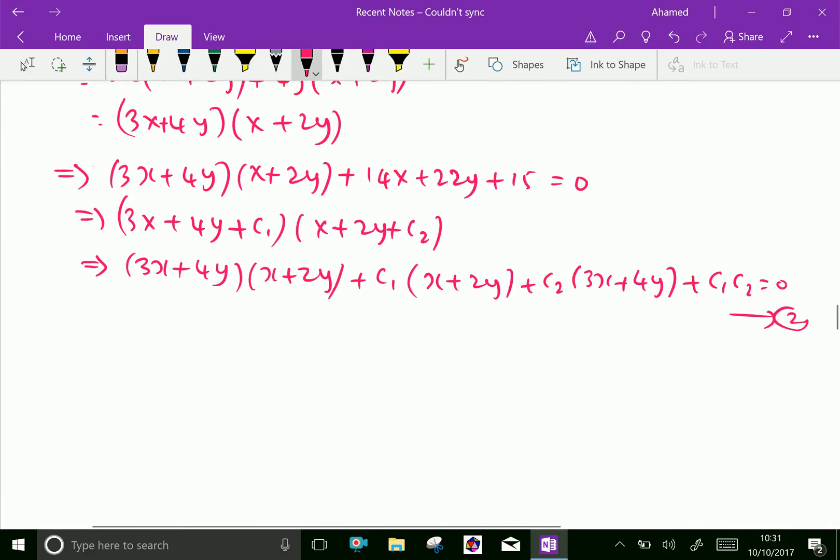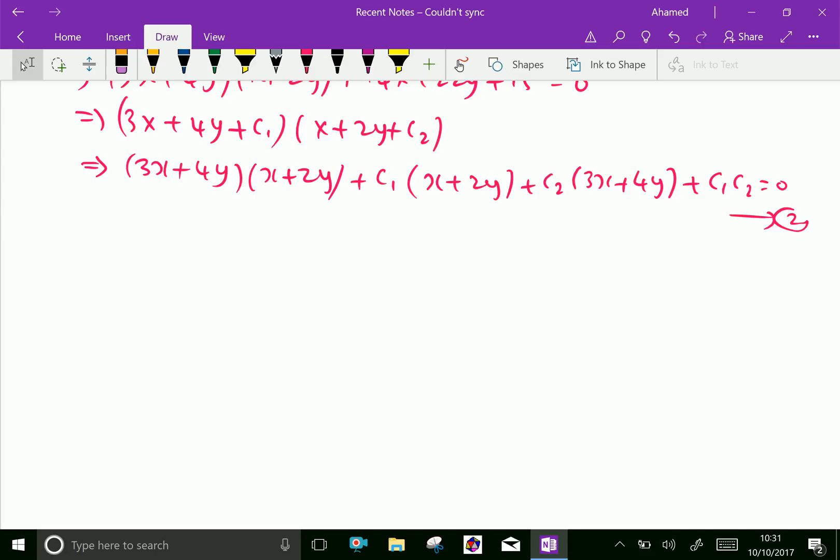Now we can compare the coefficient of x squared, x and y and constants, we get the relation c1 plus 3c2 equals 14, and 2c1 plus 4c2 equals 22. By solving this, we get c1 equal 5 and c2 equal 3.